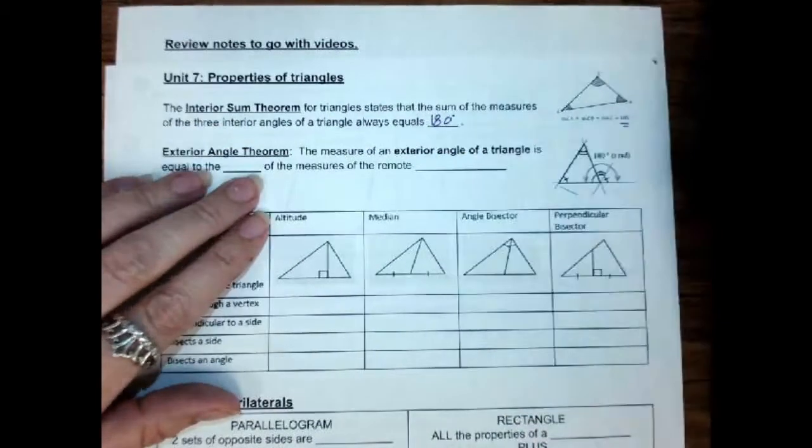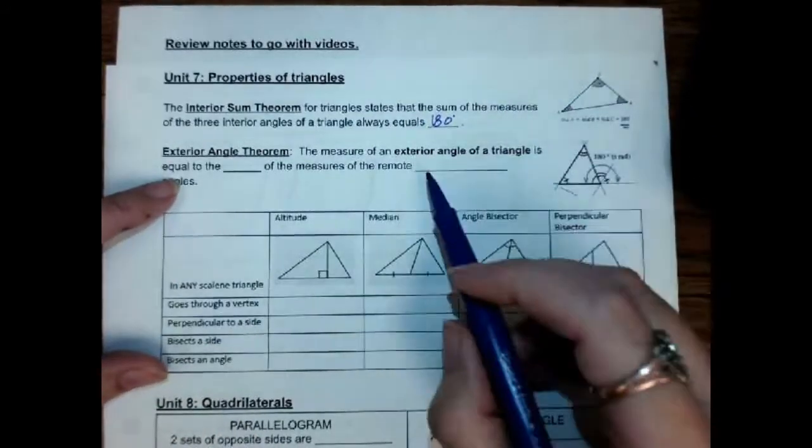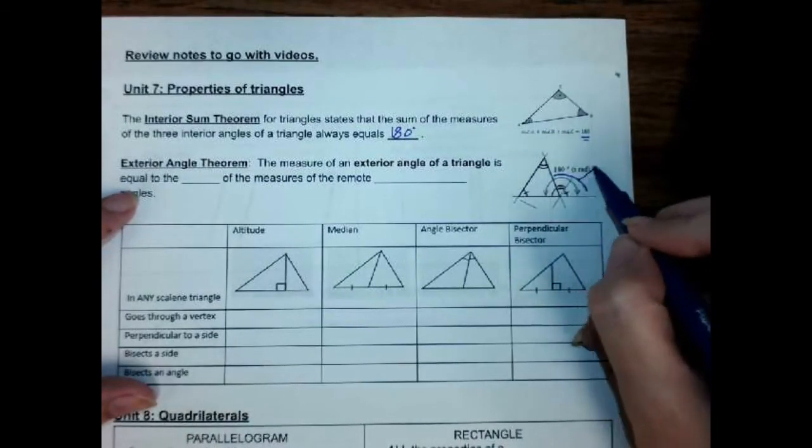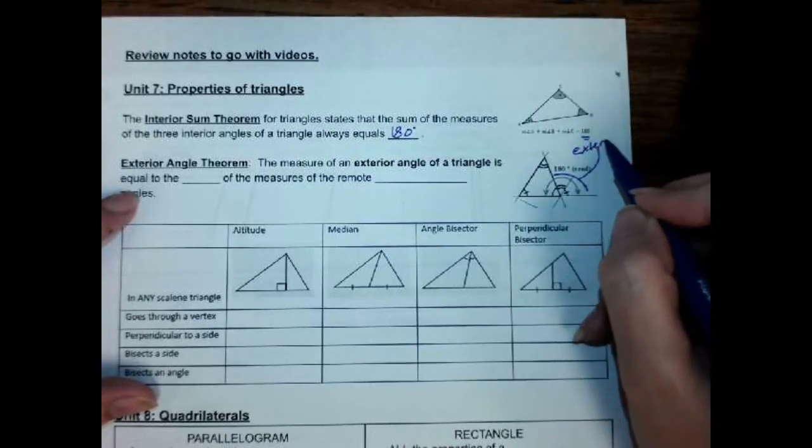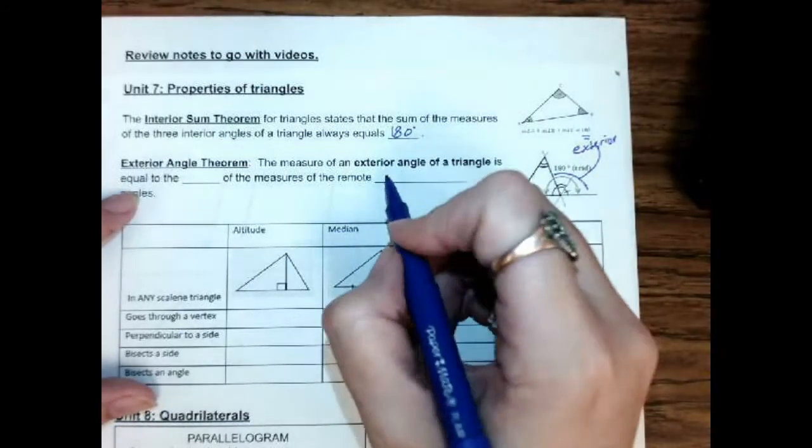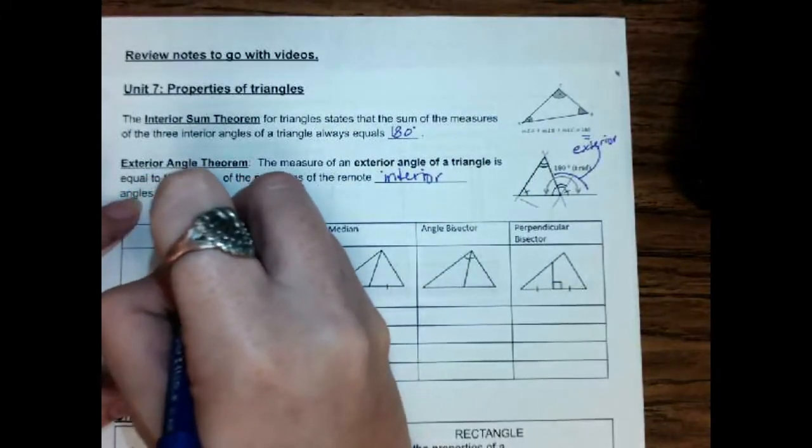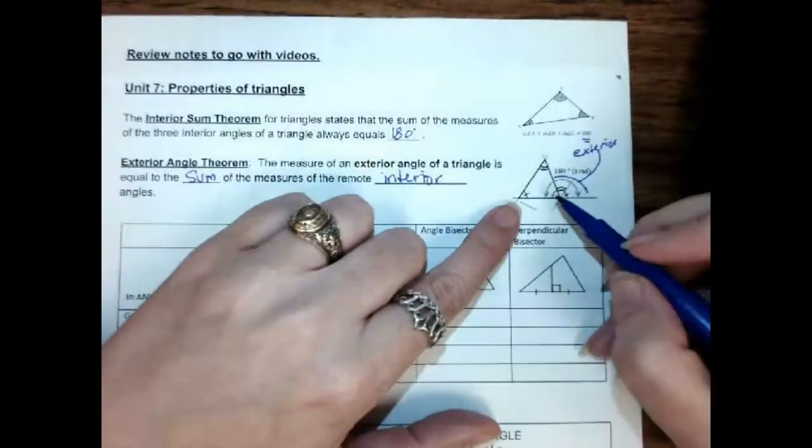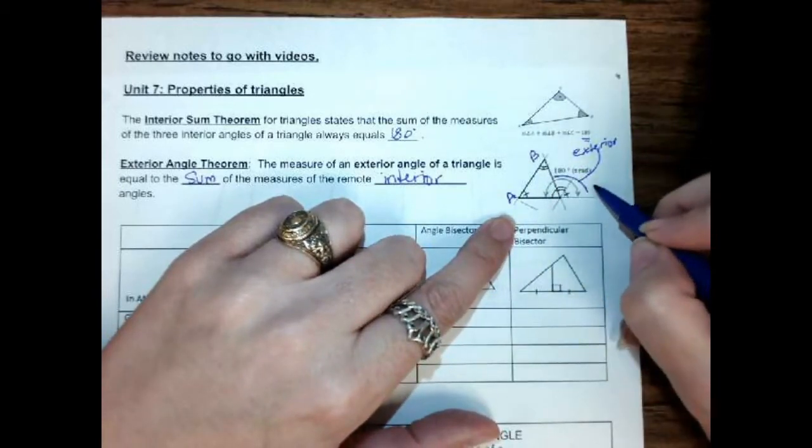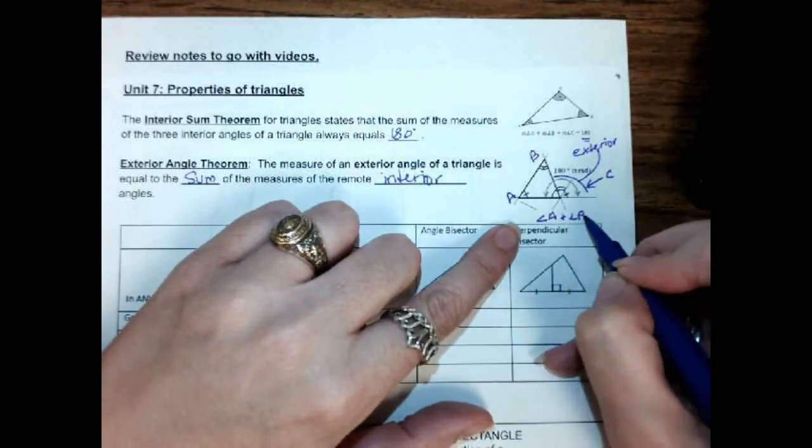We also did the exterior angle theorem that said the exterior angle, this angle right here is the exterior angle, is equal to the sum of the two remote interior angles. And what that means is if I add this one, and I add this one, it's going to equal this purple one on the outside, and we'll call that C. Angle A plus angle B equals angle C.